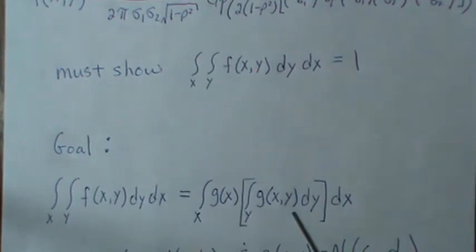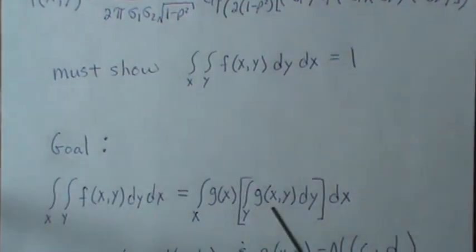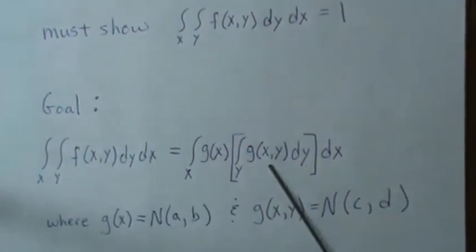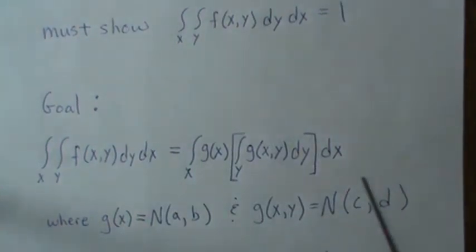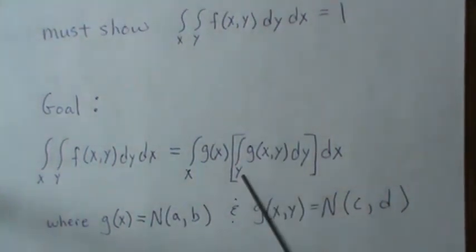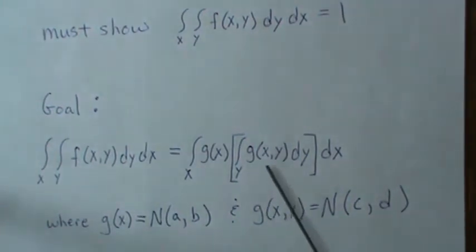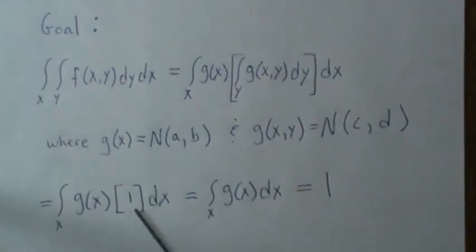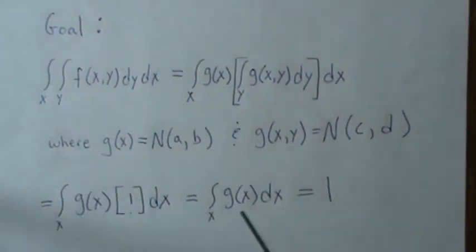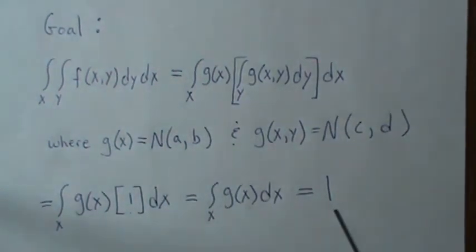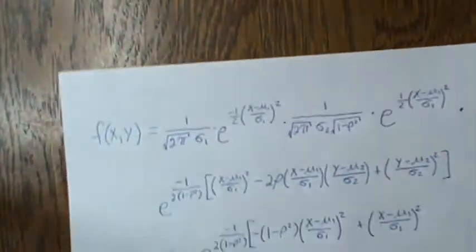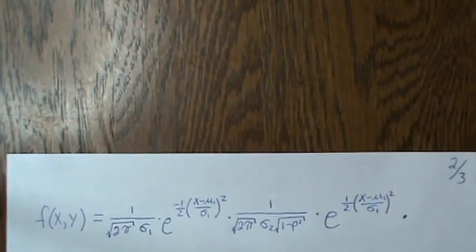Integrating over y, there could be some x's in here but they're constant. The goal is to make this look like a normal density, and when you integrate a normal density you get 1, which drops out, leaving g of x. Since that's also a normal density, it integrates to 1. That's the overall approach for this video.